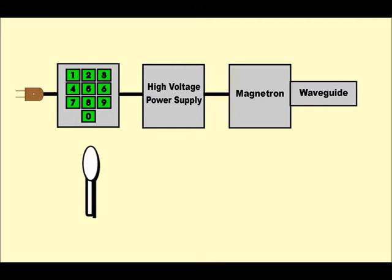You can see some buttons to select the time and power of the waves. Next we have the high voltage power supply, which produces the energy needed by the microwave oscillator, the heart of the microwave oven.